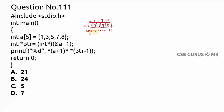The addresses occupied by this 5-element integer array are 2000 to 2003, 2004 to 2007, 2008 to 2011, 2012 to 2015, and 2016 to 2019. The next address after the array ends at 2019 is 2020. So ampersand a plus one gives the value 2020 — that is the address just after the entire array allocation.